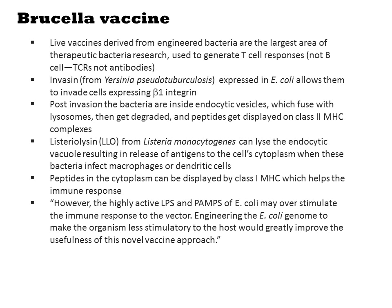One interesting thing they note is the hypersensitivity of mammalian systems specifically to E. coli, which isn't particularly advantageous here. Though they do wish to elicit immune responses, they don't really want to initiate strong innate immune responses. Such responses are primarily the result of chemically specific moieties present in enterobacteria, most significant of which is the lipopolysaccharide moiety called LPS. They suggest that engineering the E. coli genome to make the organism less stimulatory to the host would greatly improve the usefulness of this vaccine approach.